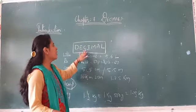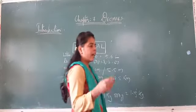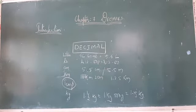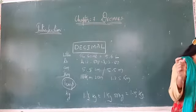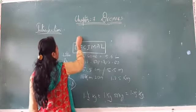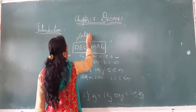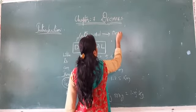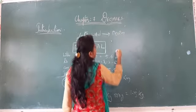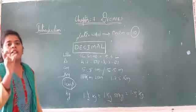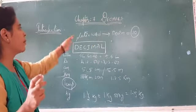Not only that — the word 'decimal' itself came from a Latin word. That Latin word refers to being rounded up to 10. So as we go up to the number 10, the term 'decimal' came from that Latin origin.